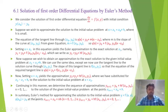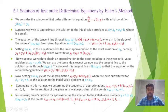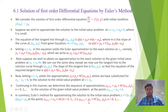In summary, Euler's method for approximating the solution to the initial value problem y' = f(x, y), y(x₀) = y₀, gives us the main formula: yₙ₊₁ = yₙ + h·f(xₙ, yₙ), for n = 0, 1, 2, ...